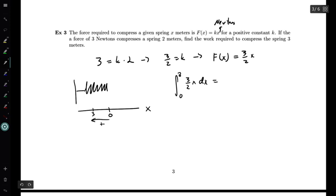We have 3 halves x dx here. This is an easy integral for us to do. This is going to be 3 quarters x squared, evaluated from 0 to 3. Evaluating at 0 gives me nothing. Evaluating at 3 gives me 3 quarters times 9, which is 27 quarters. So this is 27 out of 4 joules.